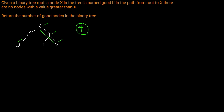Every time we visit a node, we also want to update our maximum seen, which will be the maximum of the current node's value and the maximum seen so far on that path. We're going to explore every path in the binary tree in a pre-order manner because we have to process the current node before going to its left and right subtrees — we need to update our maximum value so that our children have access to that maximum when computing whether or not they're a good node. Let's go over to the code editor to see how we implement this.